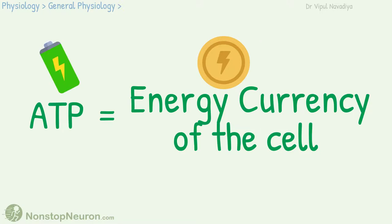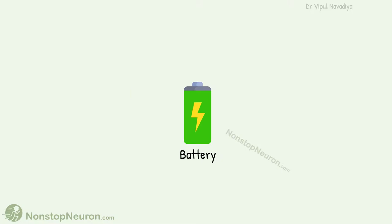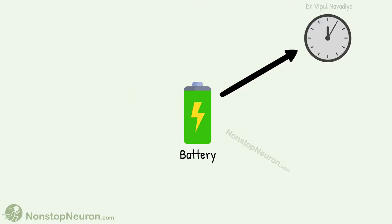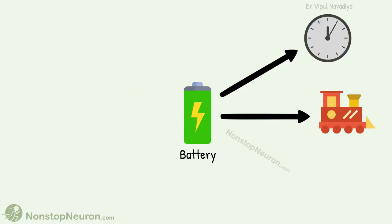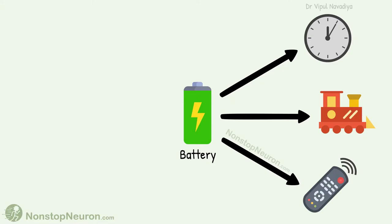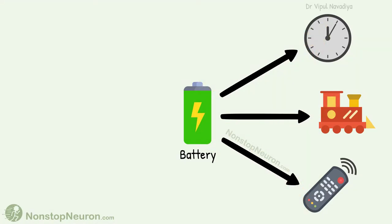ATPs are like batteries that we use in our day-to-day life. To understand how they work as an energy currency, we first need to understand why we need batteries in our day-to-day life. We use batteries in various instruments like clocks, toys, remote controls, etc. The batteries contain energy in a chemical form, and this energy goes to instruments and the instruments work.